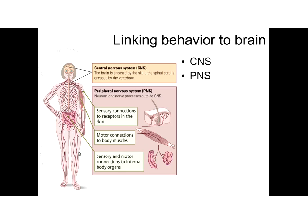How do we relate behaviors to the brain? The central nervous system is composed of the brain and the spinal cord. The peripheral nervous system refers to everything else outside — sensory connections on the skin, motor connections to muscles, and sensory-motor connections to internal body organs. These two systems work together to help us process information, maintain memories, and guide movement.